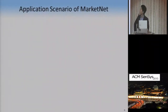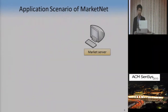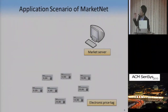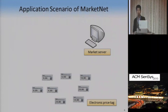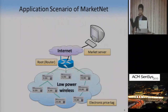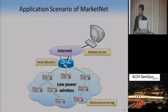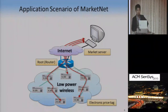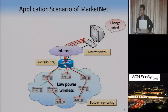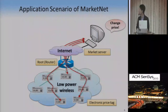This is the scenario we are considering. There is a market server in the office, and each product has an electronic price tag — an e-price tag — which has a low-power wireless module and a low-power electronic display module. There is a root connected to the server through the internet and connected to each e-price tag through low-power wireless networks. So each e-price tag can have bidirectional connectivity with the market server. Using this network architecture, whenever the server wants to update prices, it can do so remotely.